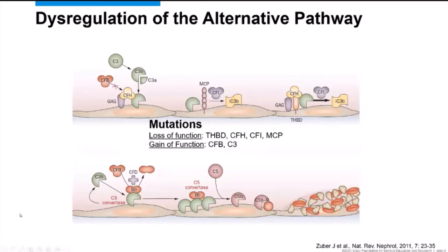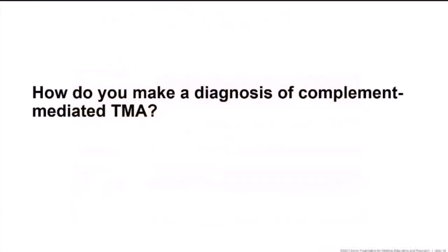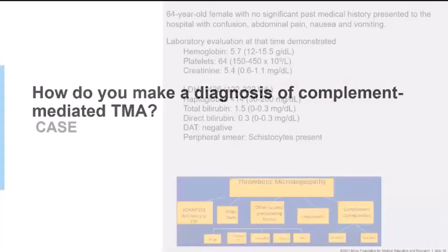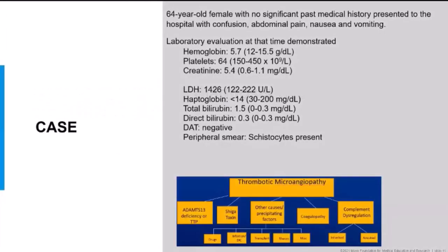In atypical HUS, there is some abnormality in these regulators. In about 50% of patients, genetic variants are identified in proteins causing either loss of function or gain of function. Dr. Moyer will discuss this in more detail. The diagnosis of complement-mediated TMA is tricky, so I'll illustrate it with a clinical case.